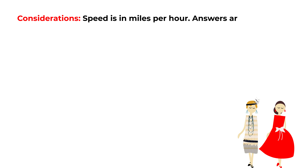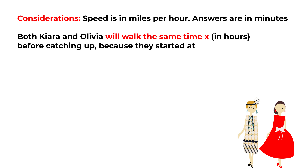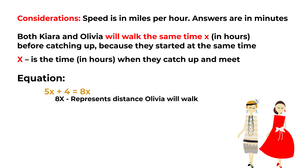One important consideration: speed is given in miles per hour but answers are in minutes, so a conversion will be needed. Both Kiara and Olivia walk for the same time x (in hours) before catching up. We build the equation: 5x + 4 = 8x, where 8x is how far Olivia walks and 5x + 4 represents Kiara's position from Olivia's starting point.